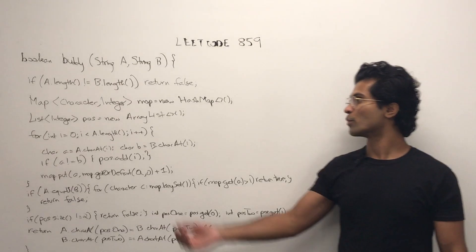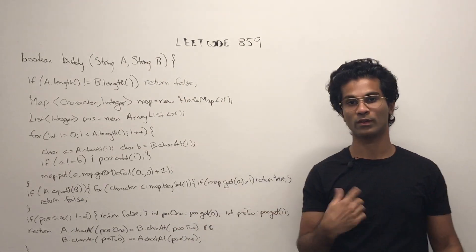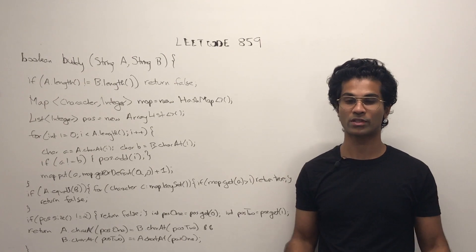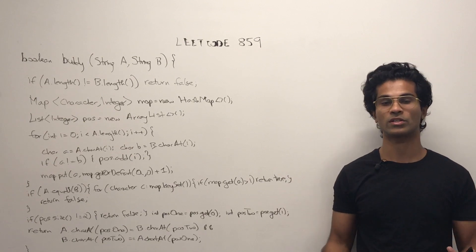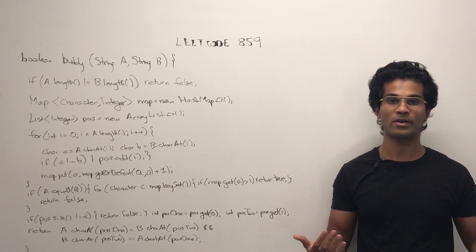Here's our code. So we take our strings and first check their length. If they're different we return false. Otherwise we initialize our map and our list of integers to keep track of the positions where the strings might possibly differ.